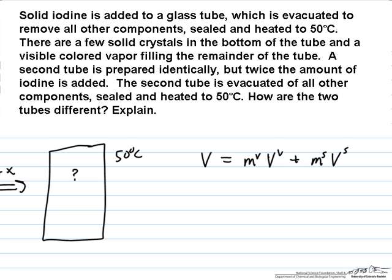And one thing that we know from the given information is that initially, because we're told there are only a few solid crystals of iodine in the container and it's mostly vapor, is that the total volume is approximately equal to the volume of the vapor, which is much, much greater than the volume of the solid.